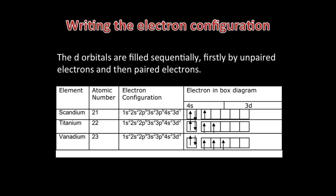As we go along from scandium to titanium to vanadium, we add an unpaired electron sequentially into the 3D orbital. The diagram in the table illustrates the electron arrangement. Each arrow in the boxes on the right represents an electron and each box an orbital. The 4S has only one orbital with two electrons and the 3D subshell has five orbitals.